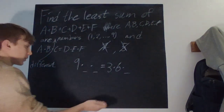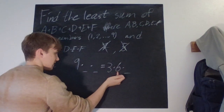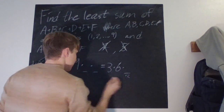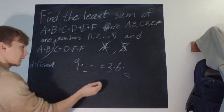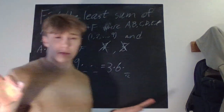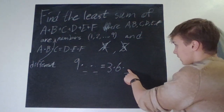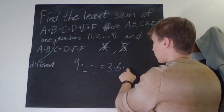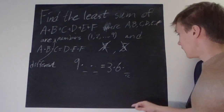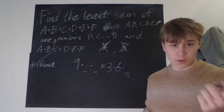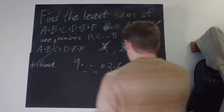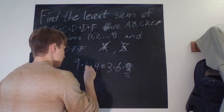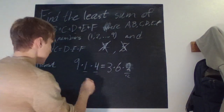Three times six is 18, so we need nine times something times something to equal 18 times something. That means one side has an extra factor of two. If we put a one here, then some number times some number must equal two, which is only one times two — but we've already used one. If we put a two here, then something times something must equal four, and we're not allowed to reuse two. We can put a four, giving us one times four — that works.